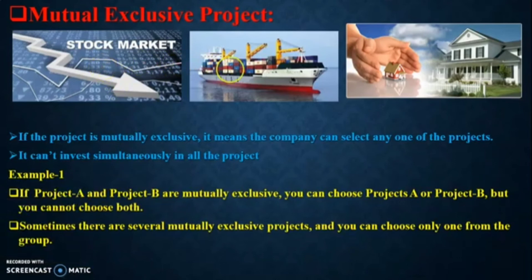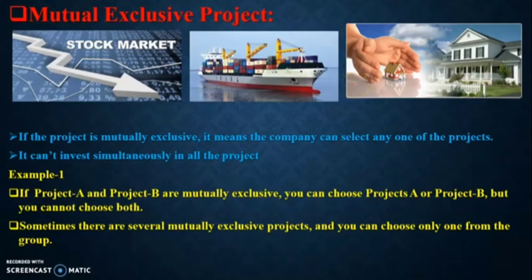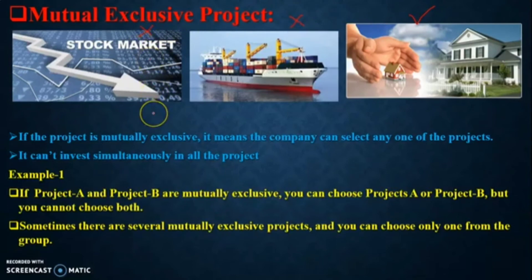Here is an example of a mutually exclusive project. Consider an enterprise with three options: number 1 — stock market, number 2 — shipping business, number 3 — real estate business. All three are profitable, but you can choose only one sector for investment. If you choose real estate business, you must reject shipping and stock market, because in mutually exclusive projects you can invest your fund in only one sector.